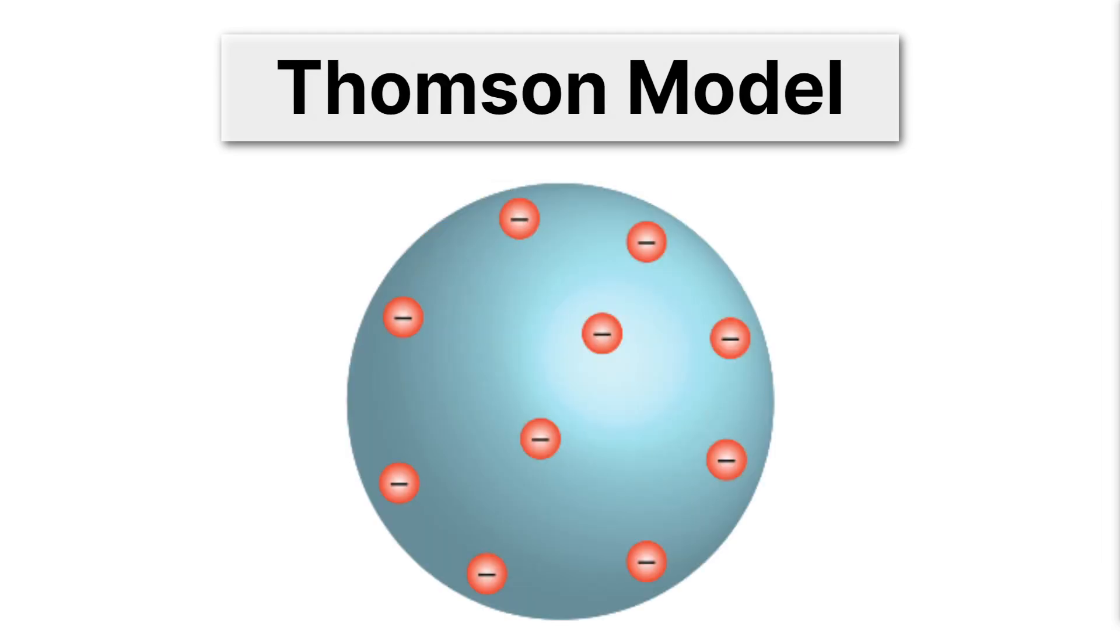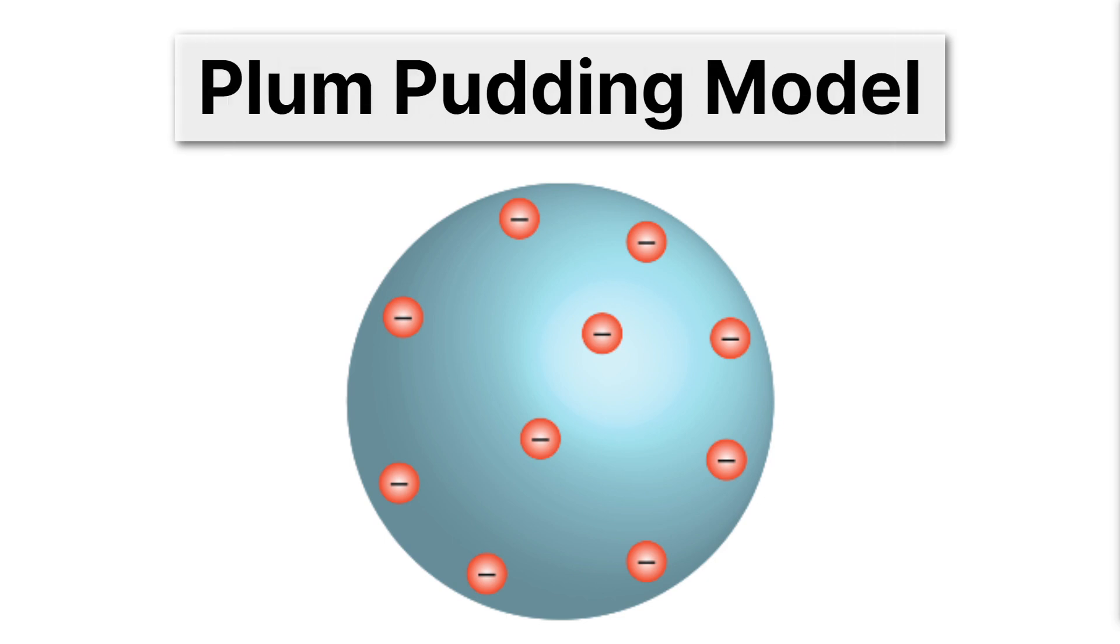And Thomson, in the cathode ray experiment, smashed that idea when he discovered the electron. And he suggested what was called the plum pudding model, which has negatively charged electrons distributed throughout a positively charged pudding. Pretty strange stuff, right?